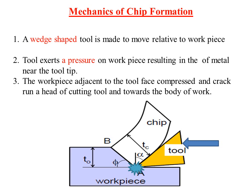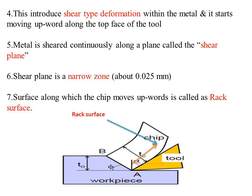Now, the mechanics of chip formation. Chips are formed by the metal removal process. The tool causes a shear-type deformation in the work material as it moves across the work piece.